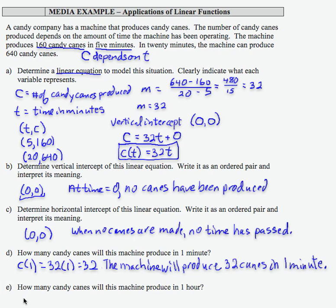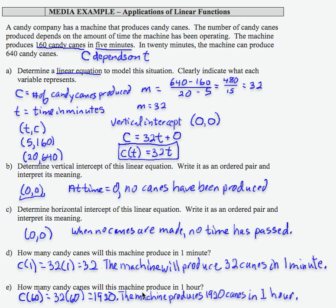How many will the machine produce in an hour? Well, an hour, that's 60 minutes. Don't just put 1 because then that would not be the right units. So 32 times 60 equals 1920. And what we can say then is that the machine produces 1920 canes in 1 hour.